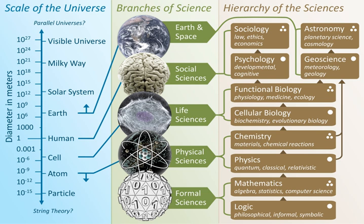Systems theory is the interdisciplinary study of systems in general, with the goal of elucidating principles that can be applied to all types of systems in all fields of research. The term does not yet have a well-established, precise meaning, but systems theory can reasonably be considered a specialization of systems thinking and a generalization of systems science. The term originates from Bertalanffy's General System Theory and is used in later efforts in other fields, such as the action theory of Talcott Parsons and the system theory of Niklas Luhmann. In this context the word systems is used to refer specifically to self-regulating systems, i.e. that are self-correcting through feedback. Self-regulating systems are found in nature, including the physiological systems of our body, in local and global ecosystems, and in climate.